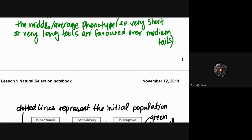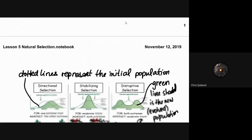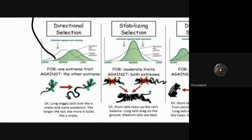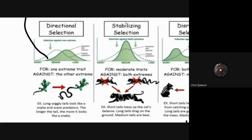With directional selection, one extreme is favored and the average trait shifts in that direction. For example, a long, wiggly tail tends to resemble a snake, which scares predators that are afraid of snakes. So the longer the tail, the more it looks like a snake, and that becomes a survivability adaptation — the average tail length in the species becomes longer over time.